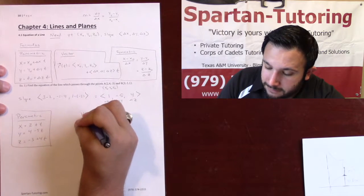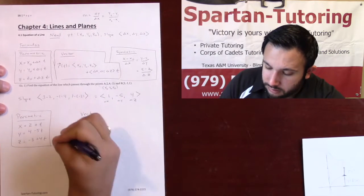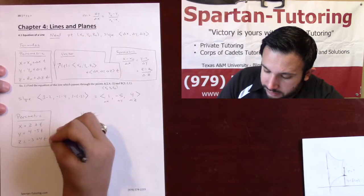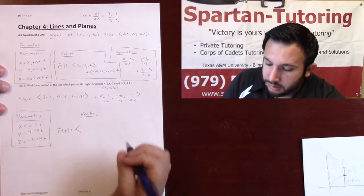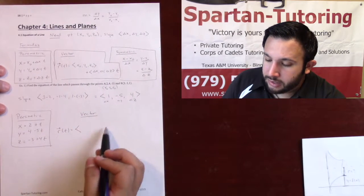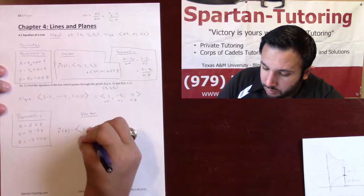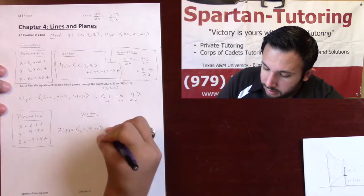If they want it as a vector equation, r of t is going to be, you write your x naught, y naught, z naught, so it's going to be 2, 4, negative 3, plus